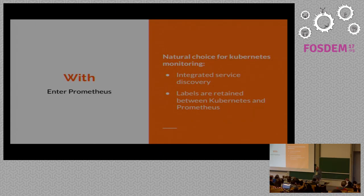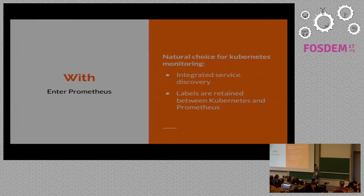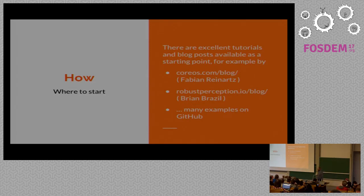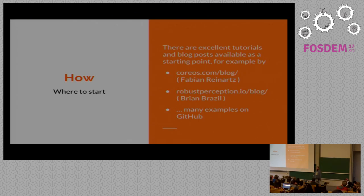Prometheus seems to be a natural choice when doing Kubernetes monitoring. It has an integrated service discovery for Kubernetes, and it retains labels between Kubernetes and Prometheus. For example, when you define a label or an annotation in a Kubernetes definition, you have a good chance to have it retained in your Prometheus metrics. Another reason for using Prometheus: there are a lot of resources, tutorials, and blog posts available — for example, Brian's Robust Perception blog or Fabian's PromBlog — and tons of examples on GitHub.